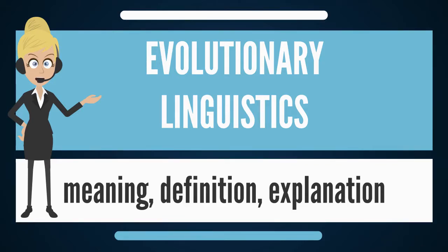Another controversial dichotomy is the question of whether human language is solely human or on a continuum with, admittedly far-removed, animal communication systems. Studies in ethology have forced researchers to reassess many claims of uniquely human abilities for language and speech. For instance, Tecumseh Fitch has argued that the descended larynx is not unique to humans. Similarly, once held uniquely human traits such as form and perception, combinatorial phonology, and compositional semantics are now thought to be shared with at least some non-human animal species.